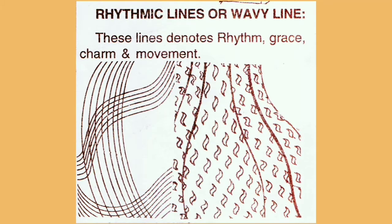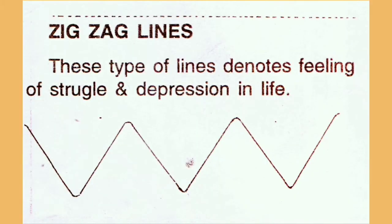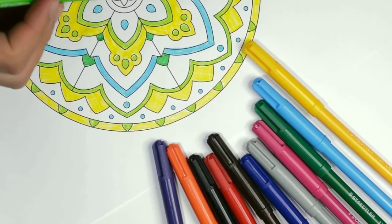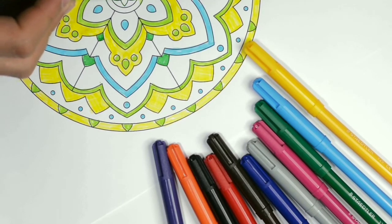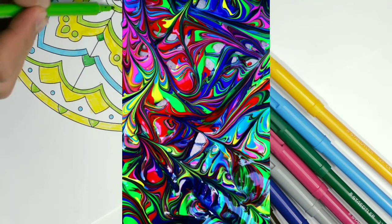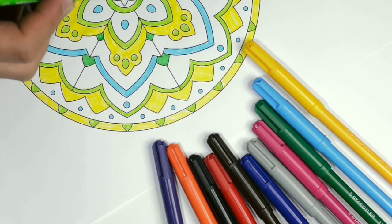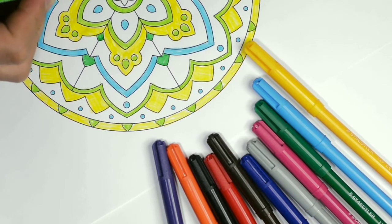Rhythmic lines or wavy lines denote rhythm, grace, charm and movement. Next, dotted lines denote doubt and incompleteness. Then zigzag lines denote feelings, struggle and depression in life. So an artist uses all these types of lines while drawing anything to express their feelings in a picture. Especially abstract artists use these more in their paintings, and you should also start applying these lines to express your feelings.